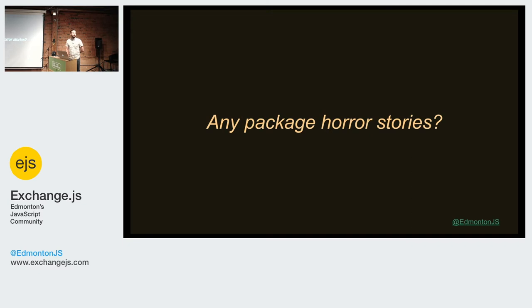One thing that happens is a lot of deploy pipelines will pull down and install libraries as part of the deploy steps, rather than using a quick-install cached version. It means that if one source for any library in your project is down — if GitHub goes down or NPM goes down — you cannot deploy your application. That's never been catastrophically bad, but it's still scary. Just be aware that any of those things could stop you from building your application.